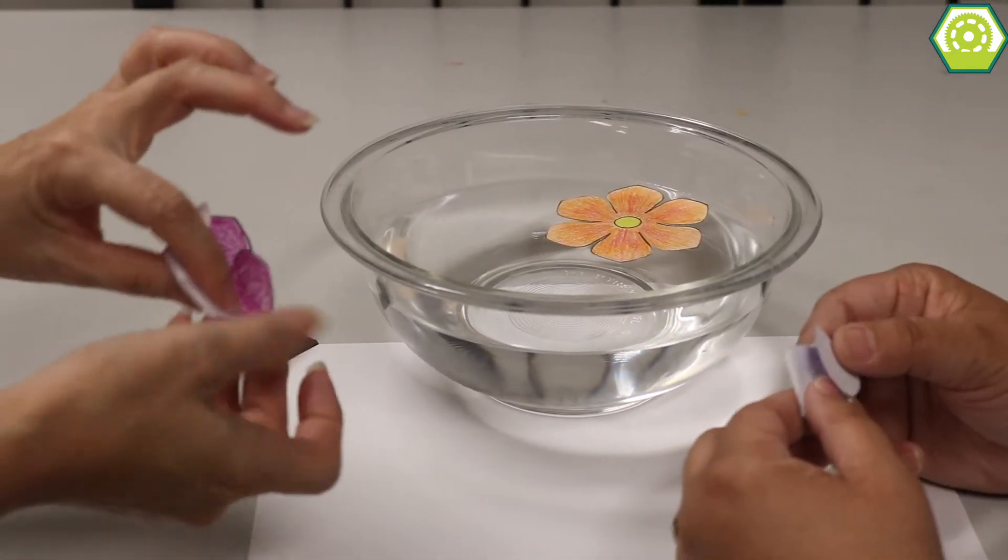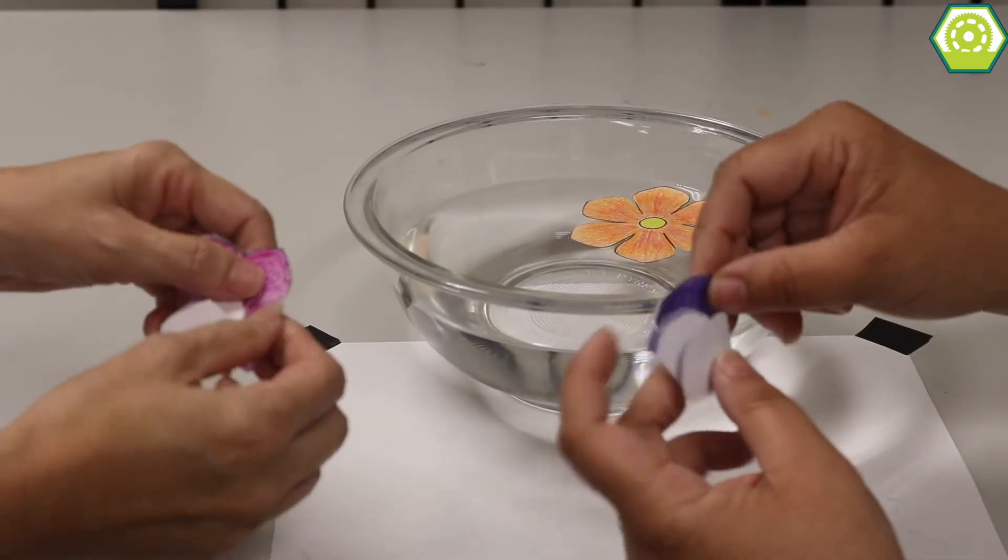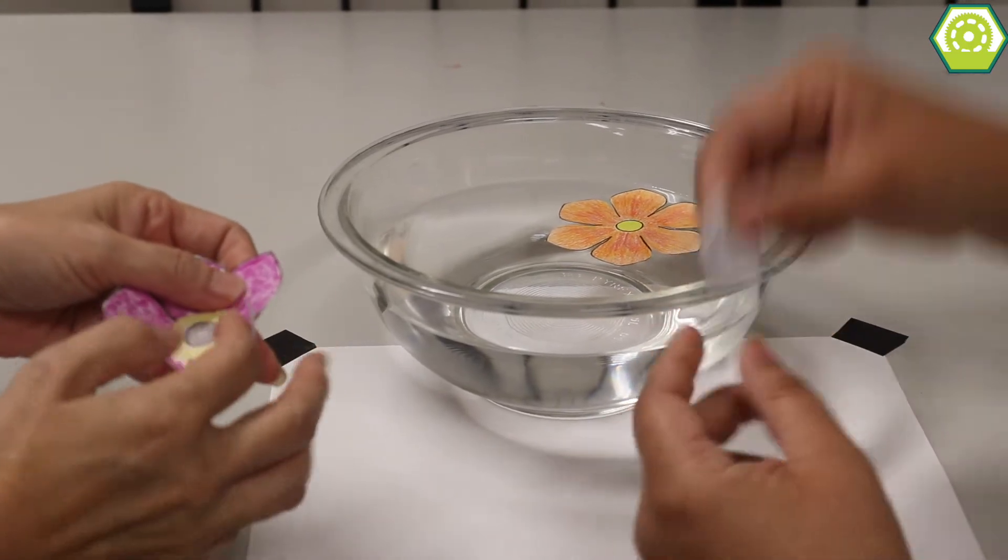Then you just fold it in backwards, right? So the white, okay, fold in. So you fold the pretty part of the flowers on the inside. You fold all the petals in, yeah, and then just drop it in the water.